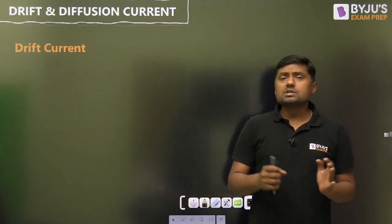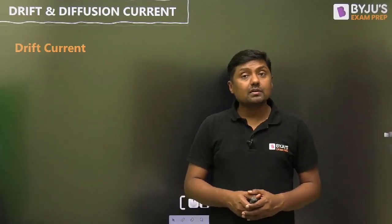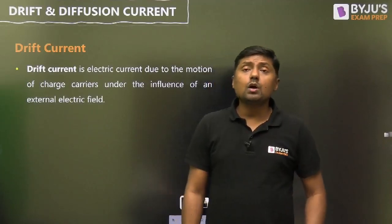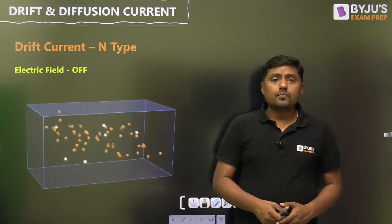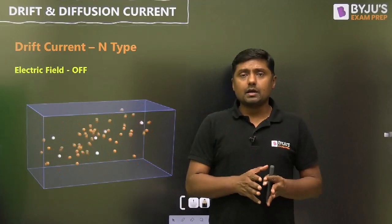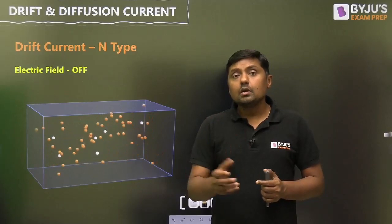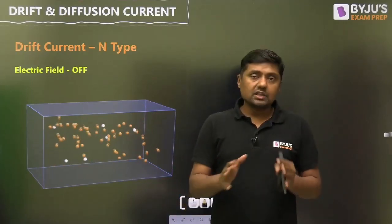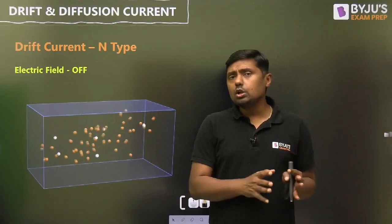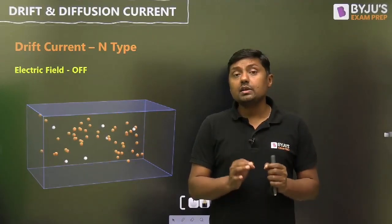What is drift current? The drift current is the electronic current due to the motion of charge carriers under the influence of an external electric field. Watch this diagram. It is an N-type bar, meaning the doping is ND — that is donor type. The concentration of electrons is very, very high compared to the concentration of holes. But when there is no external field, the motion of electrons and holes is random, and that is why the average drift velocity is zero.